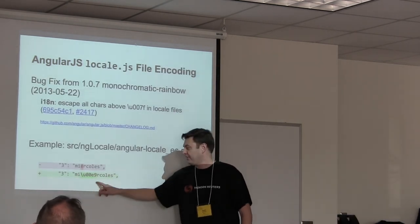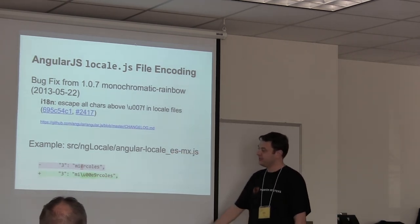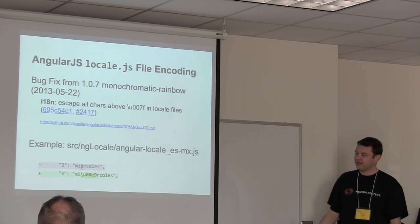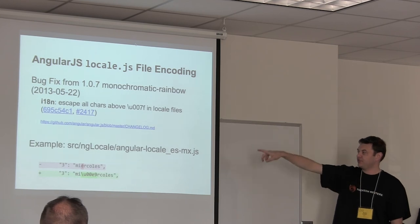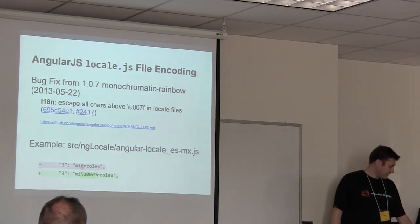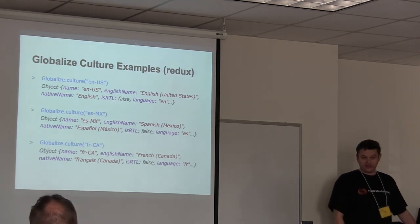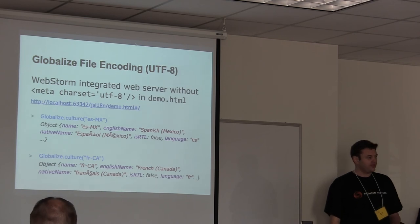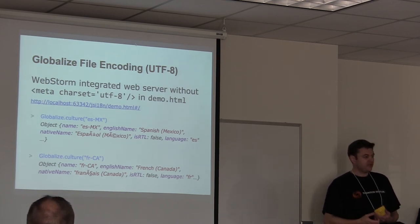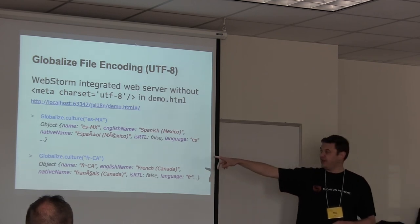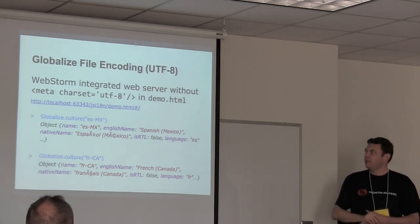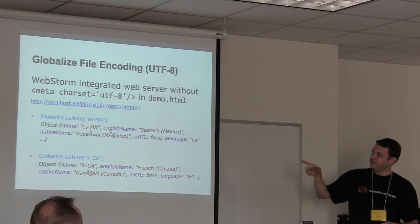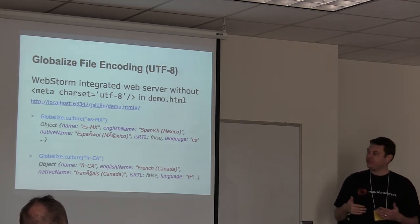In Angular's locale files, instead of using accented characters directly — like an E with an accent — they use Unicode escaping like \u00E9. This was done after a certain bug. When I did local development without serving through a web server, the native names in Globalize culture files showed garbled characters because I wasn't serving the files with proper UTF-8 headers. Once I added the meta charset UTF-8 tag to my main HTML, everything worked fine.